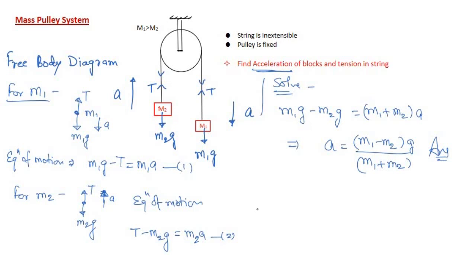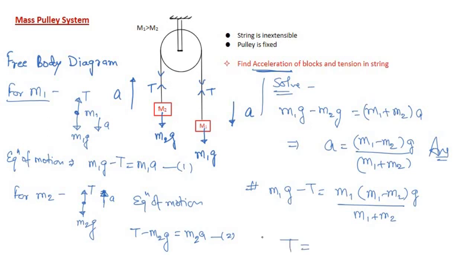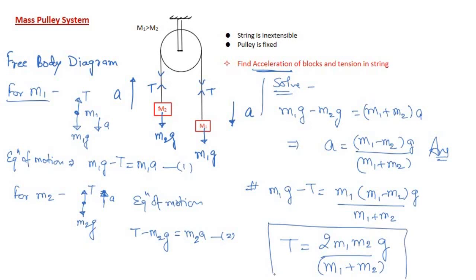Substituting a into equation 1 — m1·g − T = m1 · [(m1 − m2)·g / (m1 + m2)] — and simplifying, the m1² terms cancel and we get: T = 2·m1·m2·g / (m1 + m2). So we have solved the mass-pulley system: the acceleration is a = (m1 − m2)·g / (m1 + m2) and the tension is T = 2·m1·m2·g / (m1 + m2). These results are valid when the pulley is fixed.